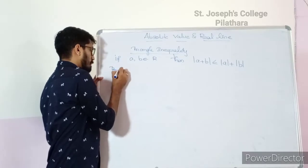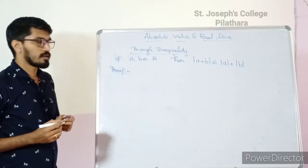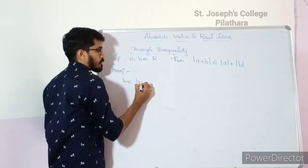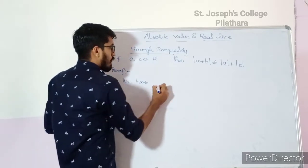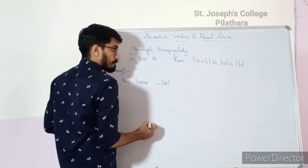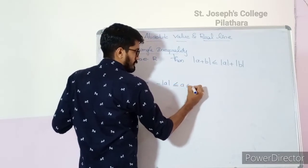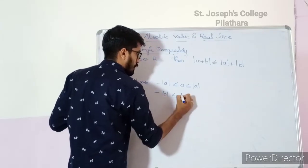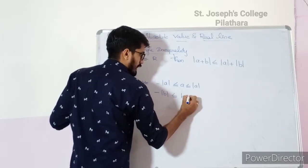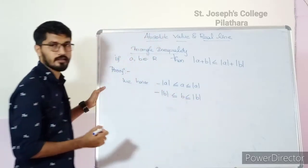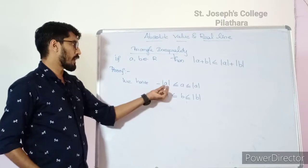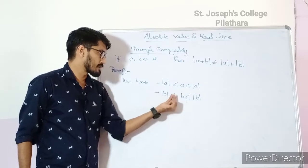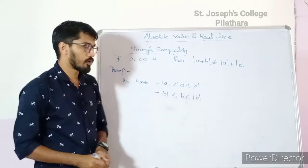We move on to proof. We have −|a| ≤ a ≤ |a| and −|b| ≤ b ≤ |b|. We have the result: −|a| ≤ a ≤ |a| and −|b| ≤ b ≤ |b|.